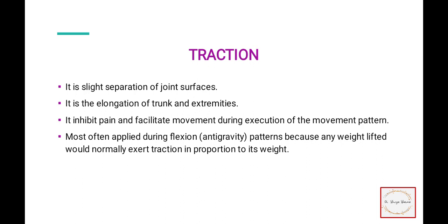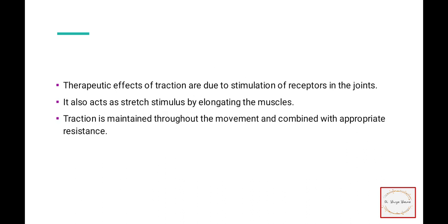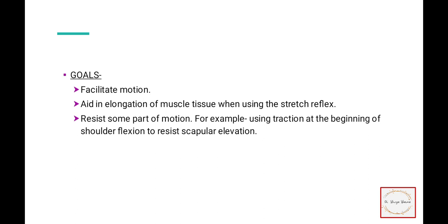The next technique of facilitation is traction. Traction means slightly separating the joint surfaces — the elongation of trunk and extremities. It inhibits pain and facilitates movement during execution of movement patterns. It is most often applied during flexion or anti-gravity patterns because any weight lifted would normally exert traction in proportion to its weight. Traction stimulates receptors in the joint, and the stretch stimulus elongates the muscle. It is maintained throughout the movement and combined with appropriate resistance. The goal is to facilitate motion, aid in elongation of muscle tissue when using the stretch reflex, and resist some part of the motion — for example, using traction at the beginning of shoulder flexion to resist scapular elevation.